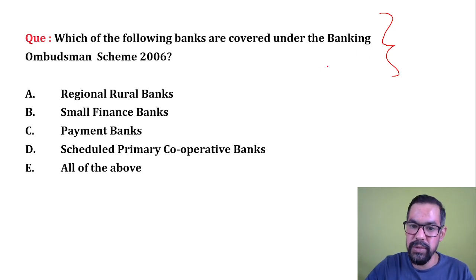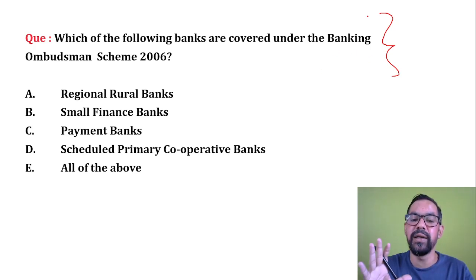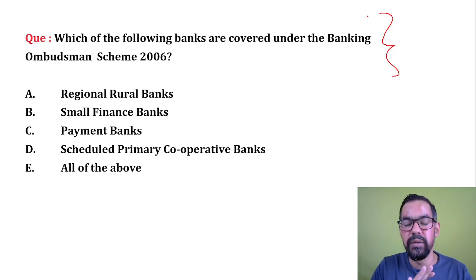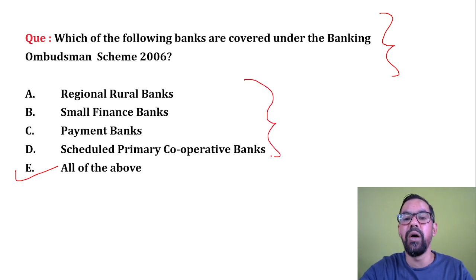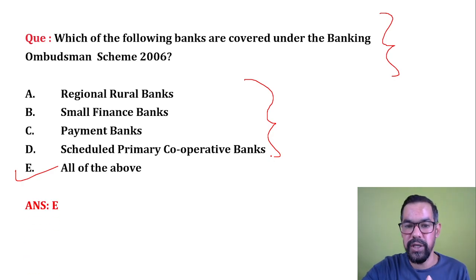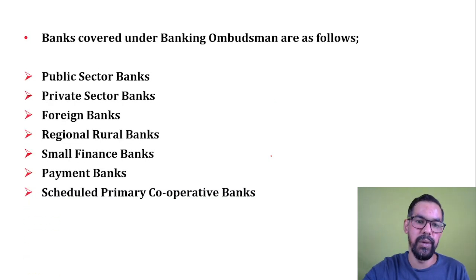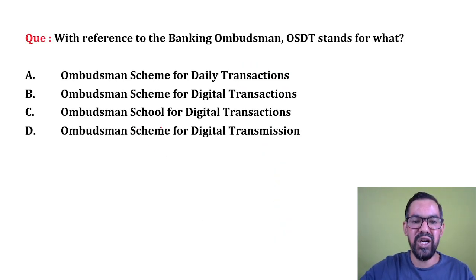Next question: Which of the following banks are covered under Banking Ombudsman or Integrated Ombudsman Scheme? All scheduled banks are generally covered under the ombudsman scheme. So the correct answer is all of the above — all scheduled banks are covered under the Integrated Ombudsman Scheme 2021.